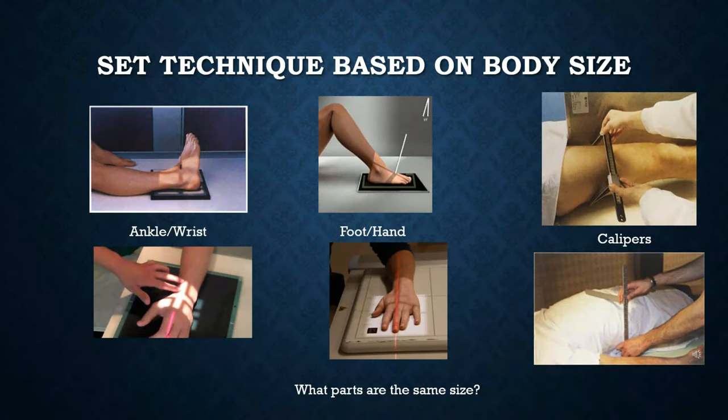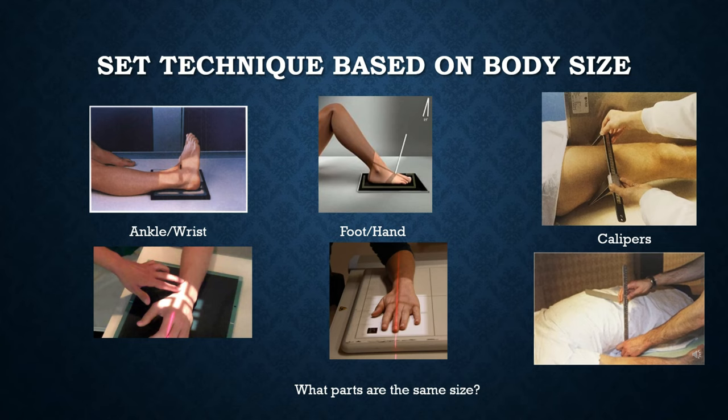Finding a caliper to measure patient thickness to determine your mAs is pretty rare in today's world. When setting technique, we need to be able to judge different body parts based on thickness and set technique accordingly. An ankle and wrist are fairly close in size. Foot and hand are fairly close. So what other parts are the same size?